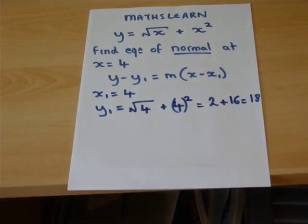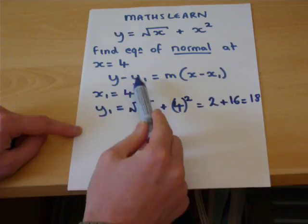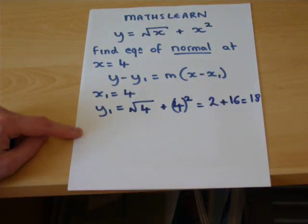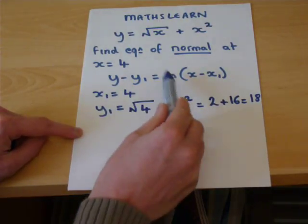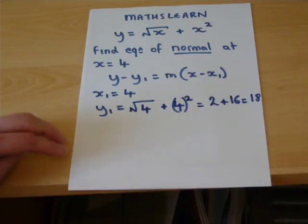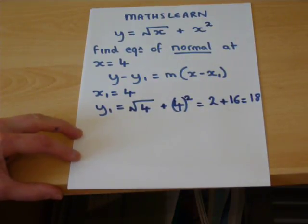So we have the coordinate (4, 18), but we still haven't got the gradient. To do that, of course, we know we need to differentiate.